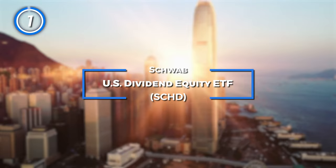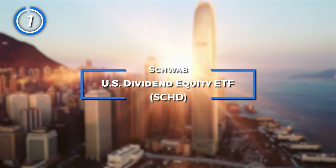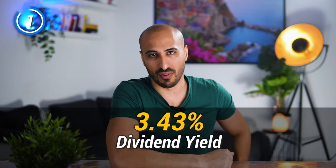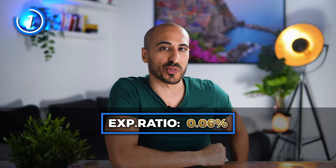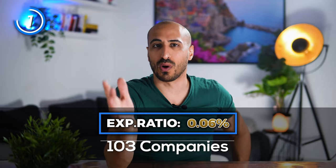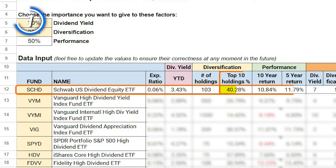Let's start with SCHD, the Schwab US Dividend Equity ETF. SCHD has a dividend yield of 3.43%, a cheap expense ratio of 0.06%, and a portfolio made out of 103 holdings. The top 10 holdings weigh 40.28% of the total portfolio, and the ETF delivered an average annual return of 10.84% in the last 10 years and 11.79% in the last 5.